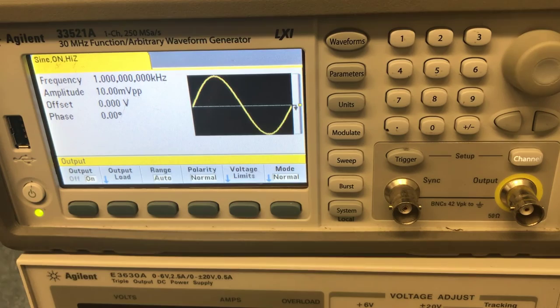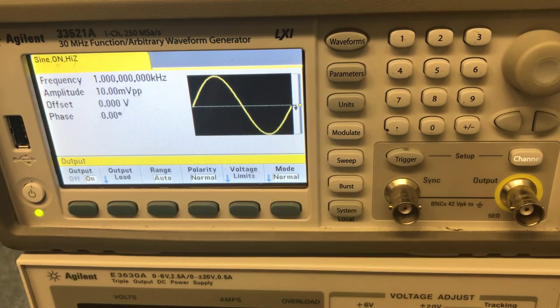Before you start the experiment, you should see that it should say sine on high Z. It should be 1 kilohertz and 10 millivolts peak to peak. If it looks just like this, then you're in great shape.